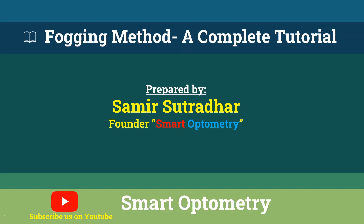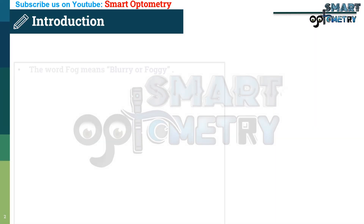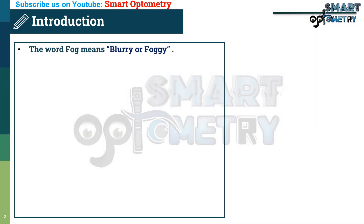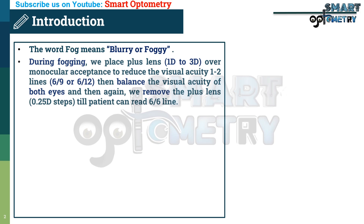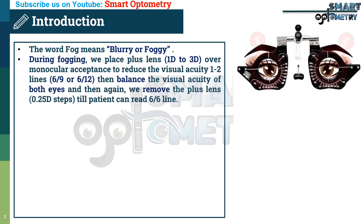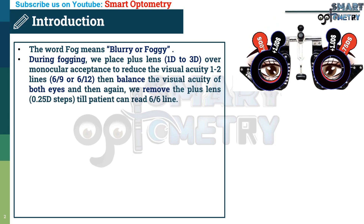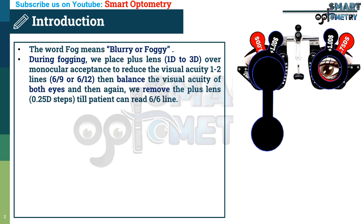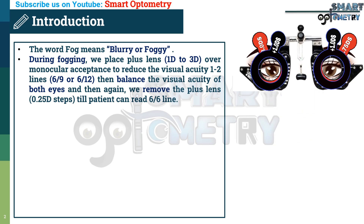Today I will discuss the fogging method — a complete tutorial. The word 'fog' means blurry or foggy. During fogging, we place plus lenses of one to three diopters over the monocular acceptance to reduce visual acuity by one to two lines, then balance the visual acuity of both eyes, and then remove the plus lens in 0.25 diopter steps until the patient can read the 6/6 line.